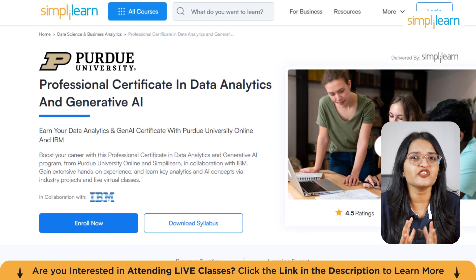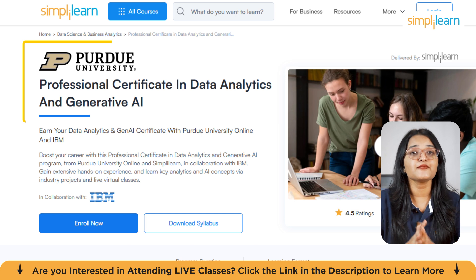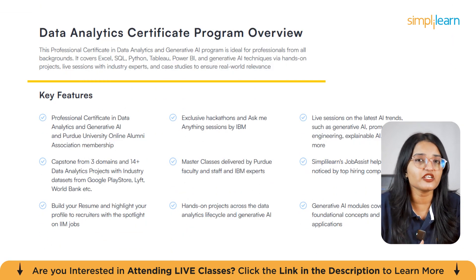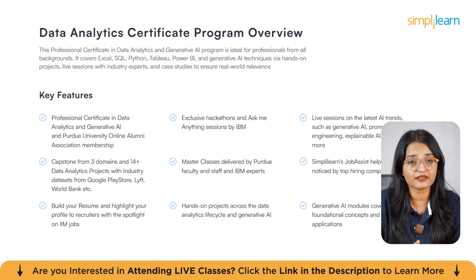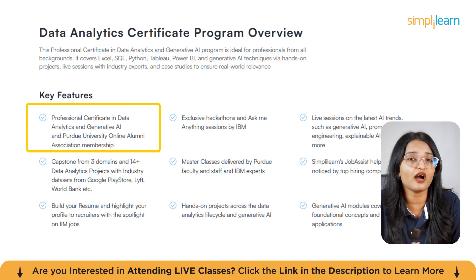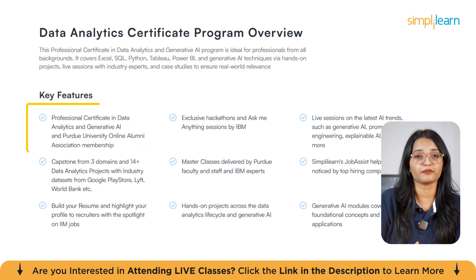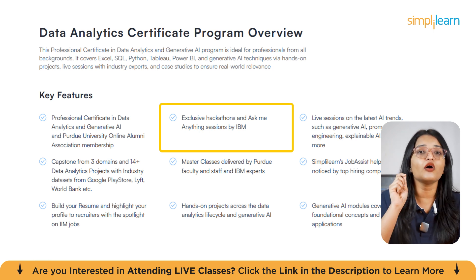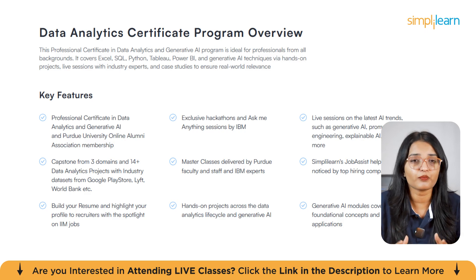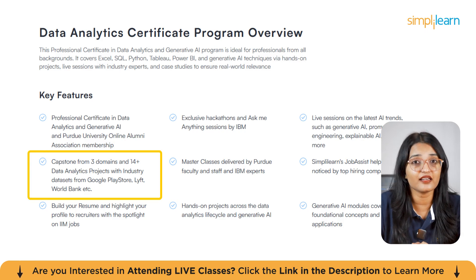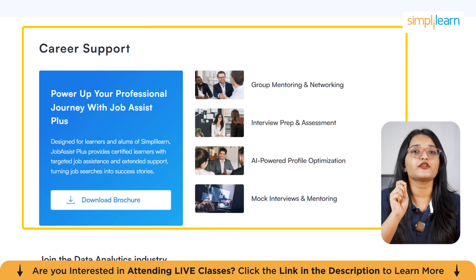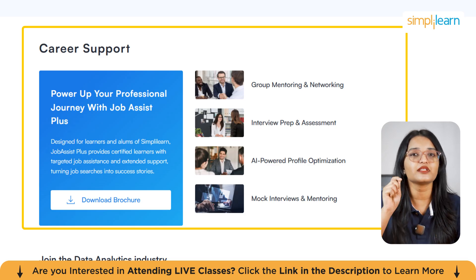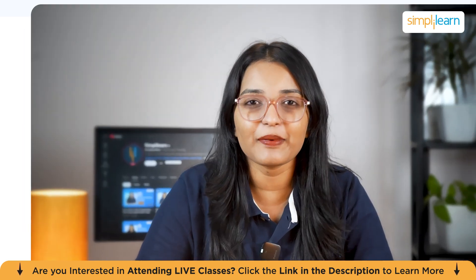Here's a quick note: earn your data analytics and Gen AI certificate with Purdue University Online and IBM. This professional certificate program covers Excel, SQL, Python, Power BI, and generative AI techniques via hands-on projects, live sessions with industry experts, and case studies. Key features include a Purdue University Online Alumni Association membership, exclusive hackathons, Ask Me Anything sessions by IBM, and live sessions on AI trends, Gen AI prompt engineering, and explainable AI. You'll also complete capstone projects from three domains and 14+ data analytics projects with industry datasets from Google Play Store, Lyft, and World Bank. Simply Learn's job assist helps you get noticed by top hiring companies. Find the course link below.